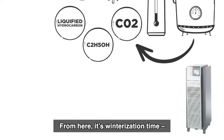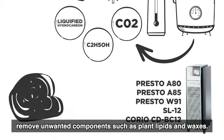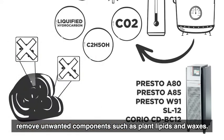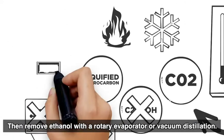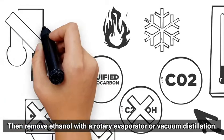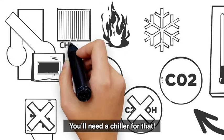From here, it's winterization time. Remove unwanted components such as plant lipids and waxes. Then remove ethanol with a rotary evaporator or vacuum distillation. You'll need a chiller for that.